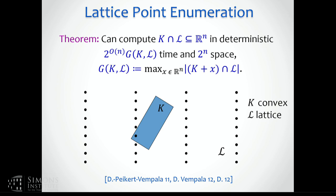If you could do this efficiently in 2 to the n time, you would immediately solve integer programming. But there are many reasons why that won't be possible: this list could be too big, or it could be empty. So you can't expect to get some complexity that only depends on the size of the list. It turns out that a reasonable bound on the complexity of enumeration is not the number of lattice points inside k — in this case it would just be 1 — but rather the number of lattice points in the worst shift of k.